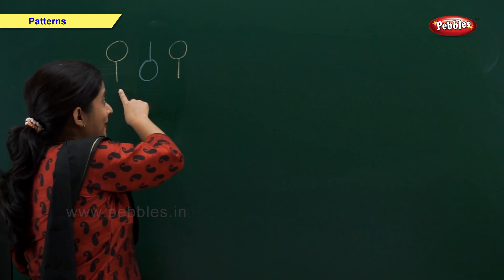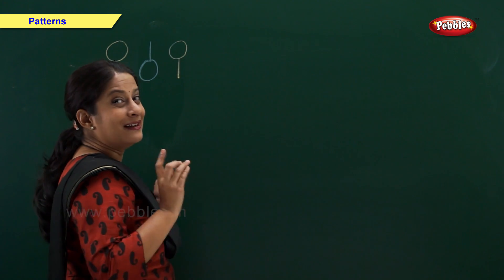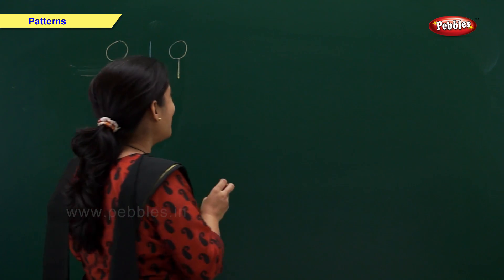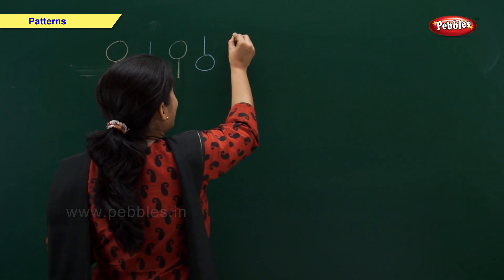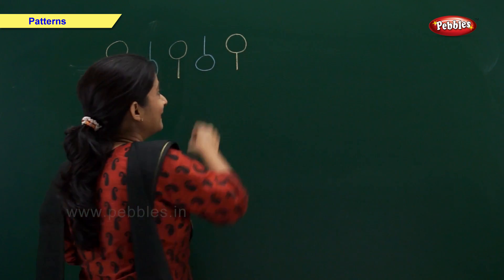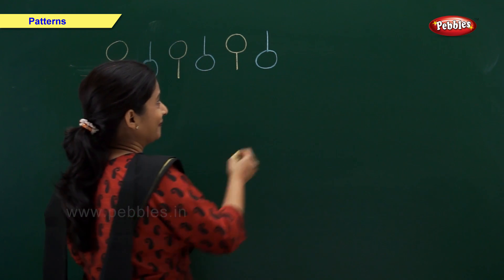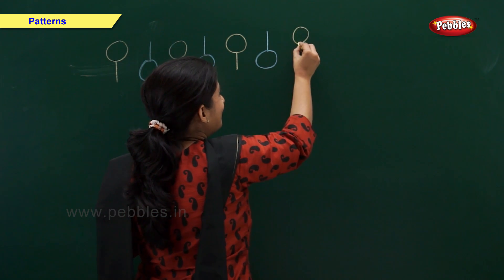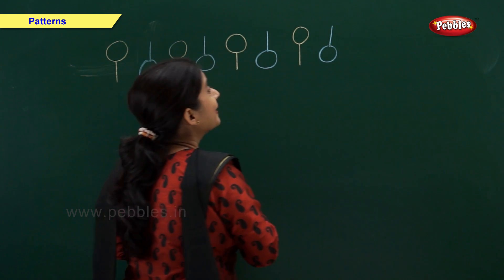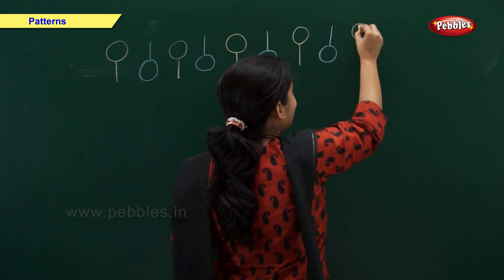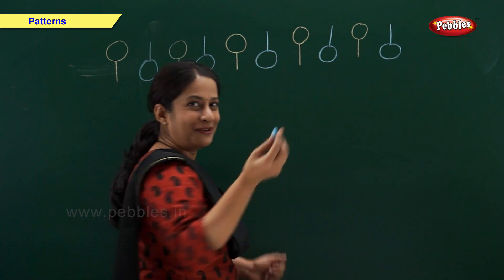Yellow lollipop and blue lollipop upside down. Yellow lollipop, and now let's draw blue lollipop upside down. Yellow lollipop and blue lollipop will be upside down. Yellow lollipop and blue lollipop will be upside down. Yellow lollipop and upside down blue lollipop.